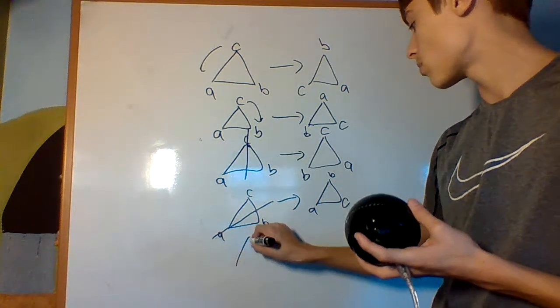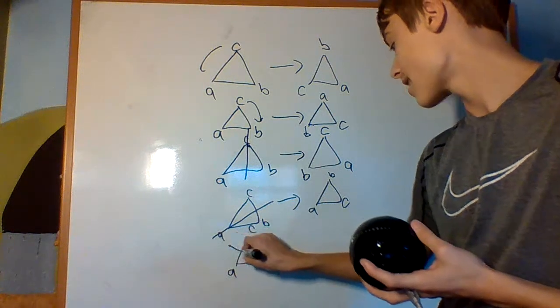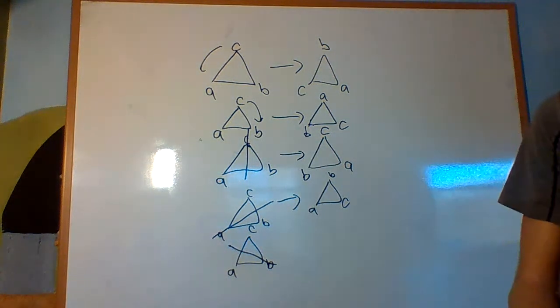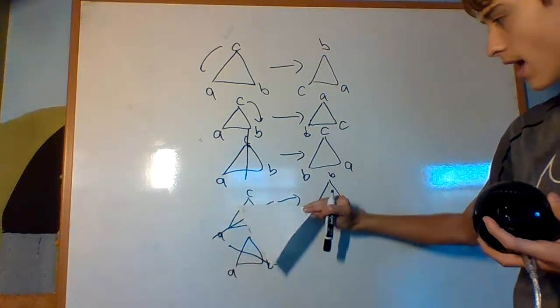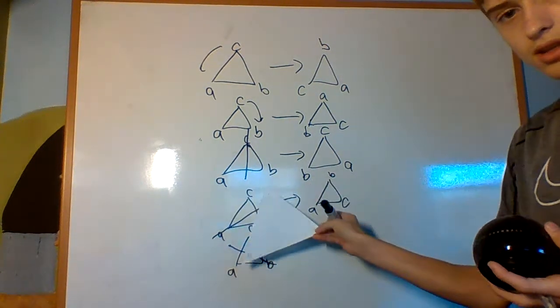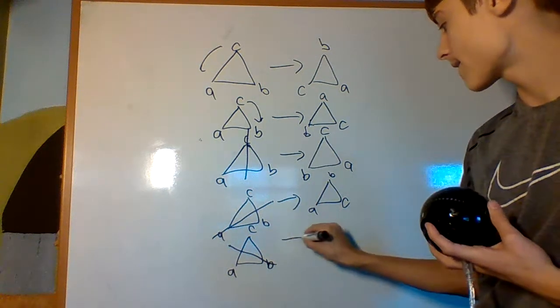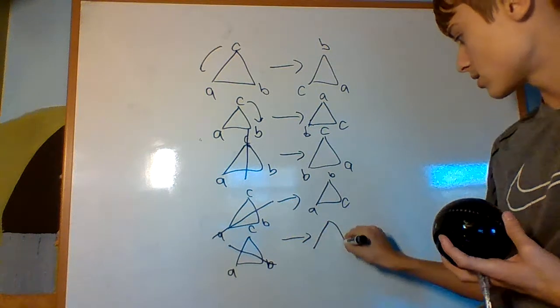And then there's just one more. It's that triangle, where I flip it like that, so like that, like this. Okay? So, that fixes B, and it switches A and C.